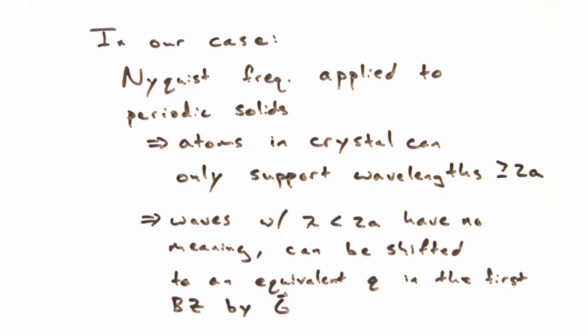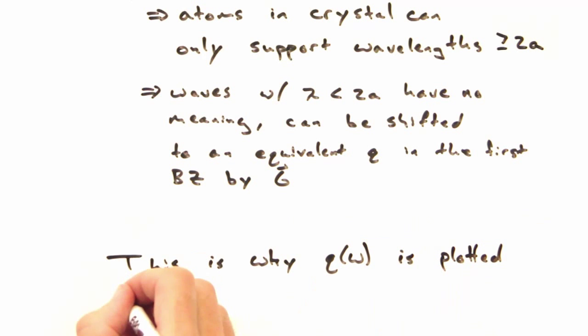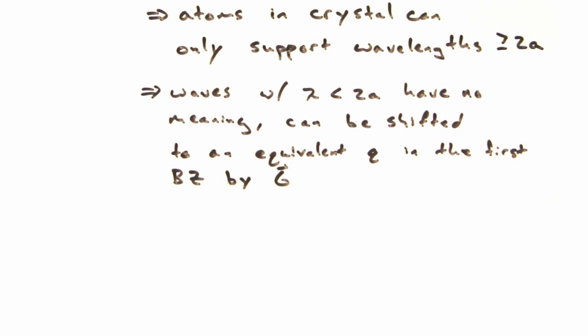Nicole, you've absolutely nailed it. And so that's why dispersions are only plotted from q equals minus pi over a to pi over a. Okay, that's all I'd like to say about Nyquist frequency in the first Brillouin zone at the moment.